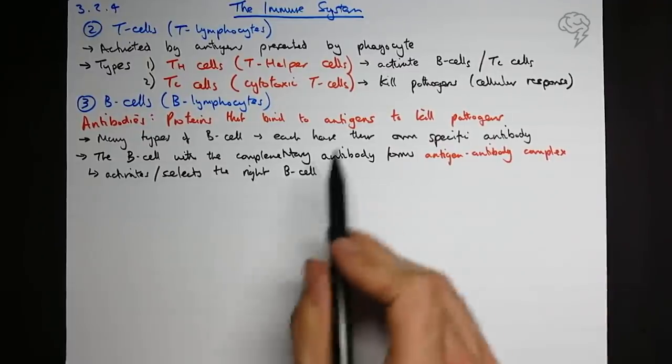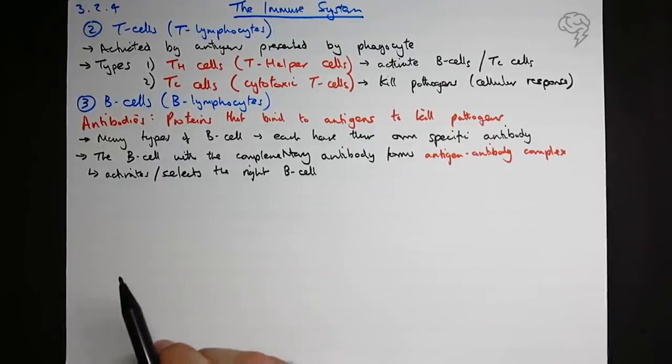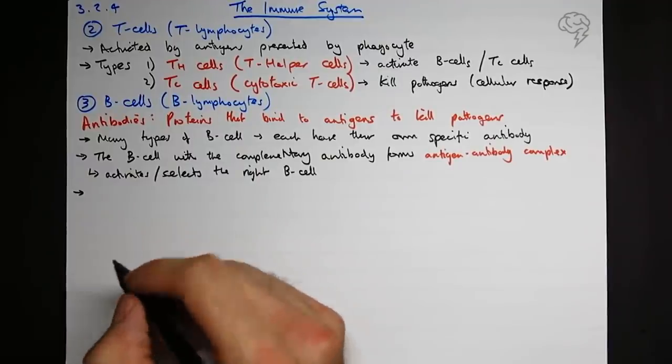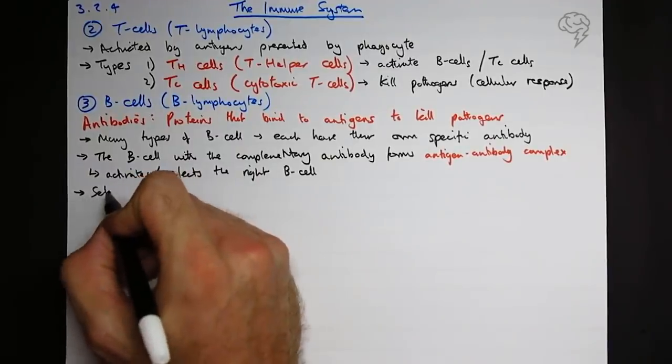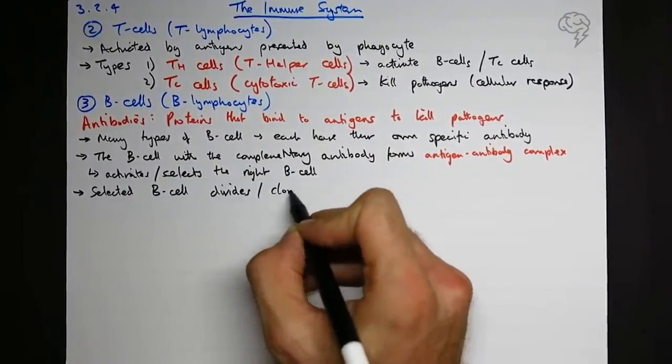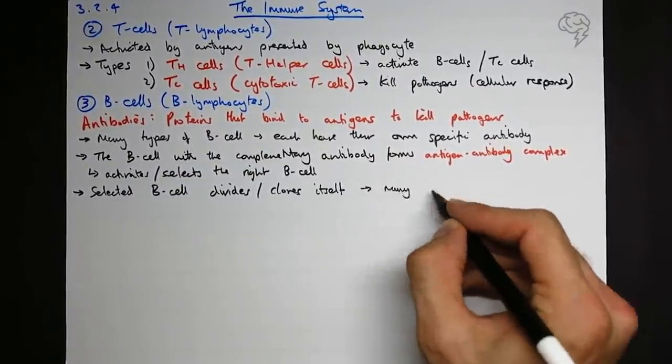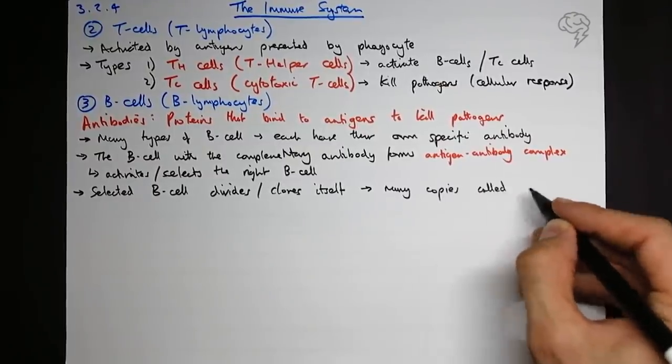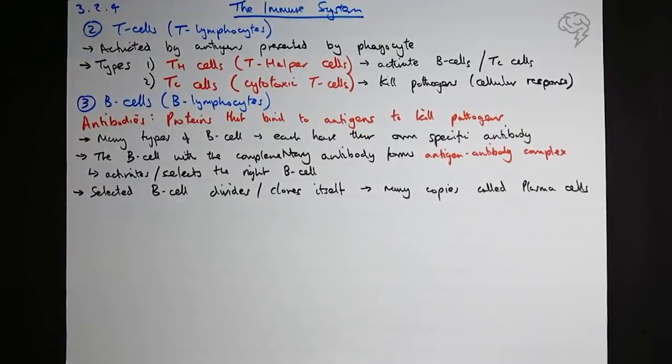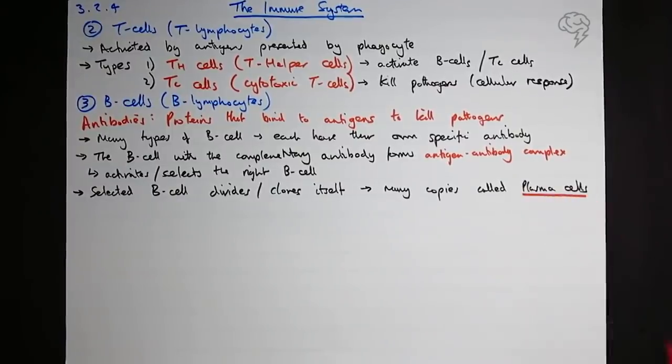And what happens when it's selected? Selected B-cell divides, or we could say clones itself, to make many copies. And these copies are called plasma cells. That definitely should be in red. I don't like underlining things like that, but I forgot. That should be in red.